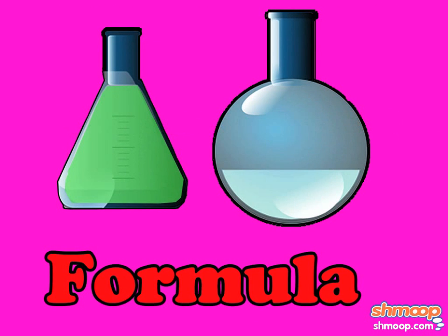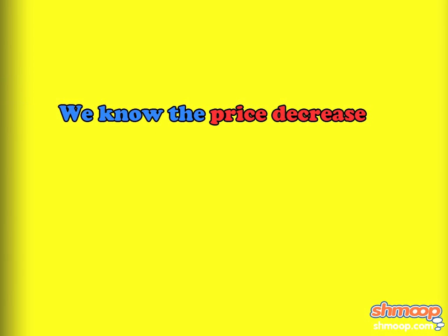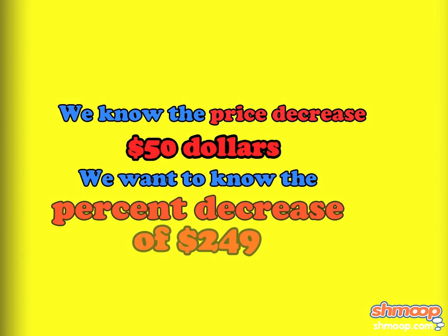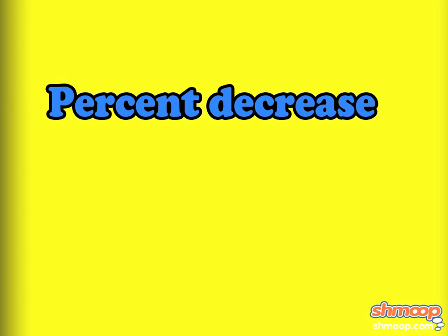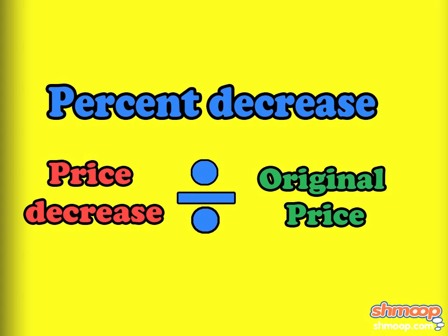To find the formula, let's ask ourselves what we're looking for. We know the reduced price, which we call the price decrease, and we want to know what percent of the original price that is, which we'll call percent decrease. To find the percent decrease, we will need to divide the price decrease by the original price.